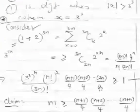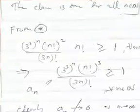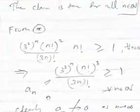Using that claim, let's denote the general term as a_n. All terms are greater than or equal to 1, which means the limit of those terms does not converge to zero as n tends to infinity. Therefore the series is divergent at x = 27.